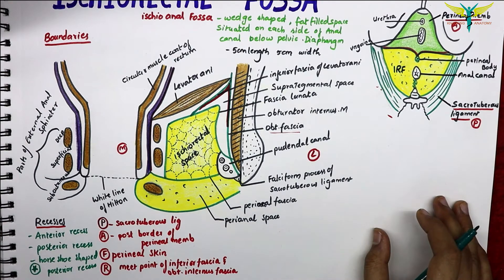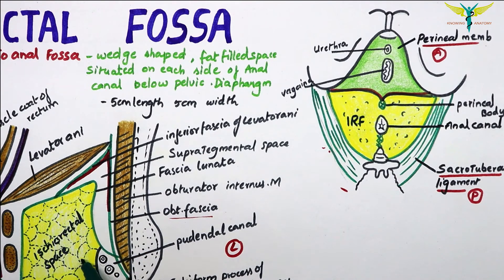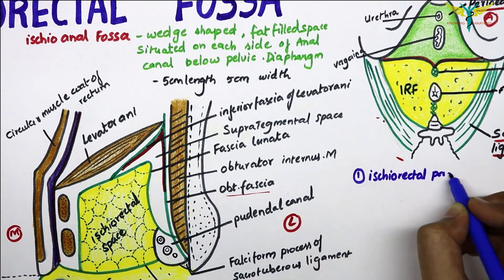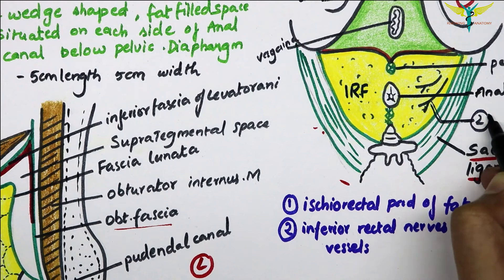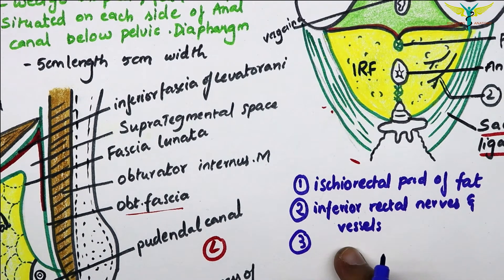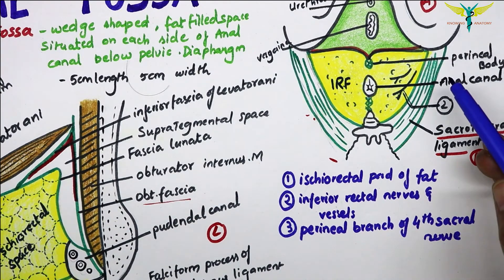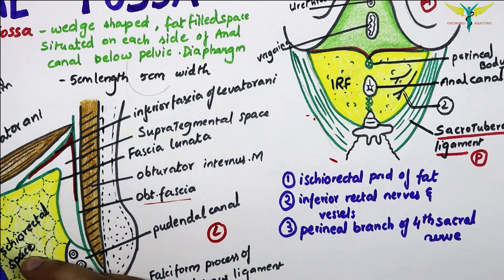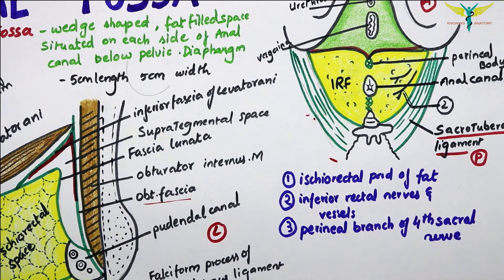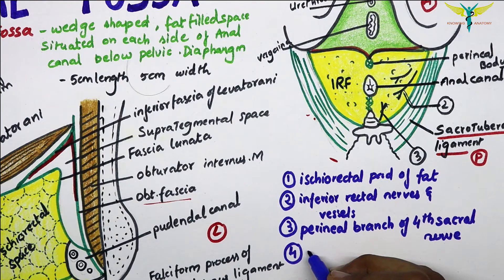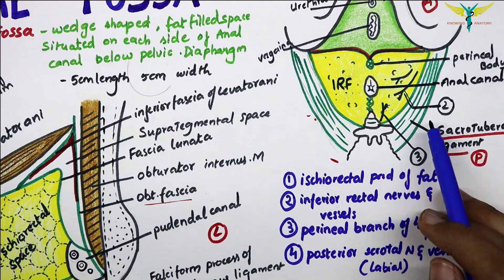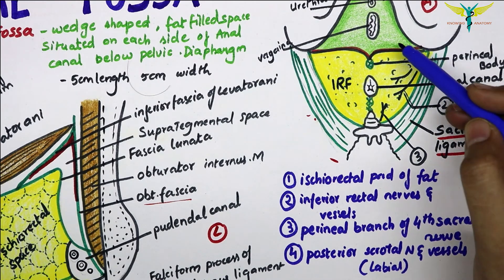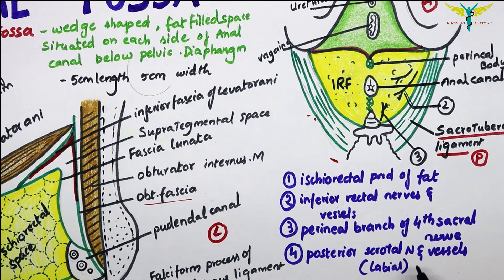Now coming to the contents of the ischiorectal fossa. The first content is the ischiorectal pad of fat. The second content is the inferior rectal nerves and vessels — you can see them in this diagram. The third content is the perineal branch of the fourth sacral nerve, which enters the posterior angle, runs over the levator ani, reaches, and innervates the sphincter ani externus. The fourth content is the posterior scrotal nerves and vessels in males, or posterior labial in females, which cross the anterolateral part of the fossa and enter the urogenital triangle.